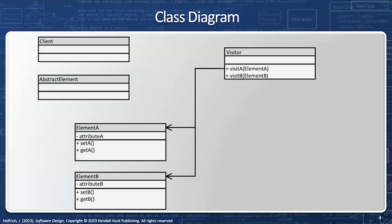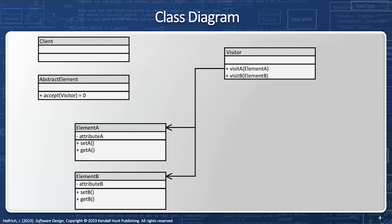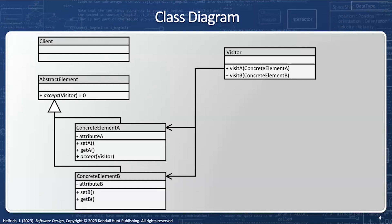Now I'm going to create an abstract element, and this abstract element is going to have an accept method that takes a visitor as a parameter. This is a pure virtual function, therefore abstract element is an abstract class — hence the name abstract. What I want to do is make element A and element B inherit from abstract element. Now I want to connect element A and element B to abstract element through inheritance, which means that element A is now concrete element A and element B is now concrete element B. Because abstract element has a pure virtual function, I must implement accept in concrete element A as well as in concrete element B. This accept method is the only method that is common between element A and element B.